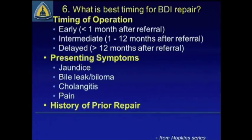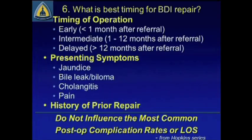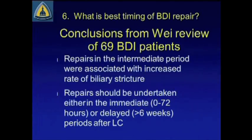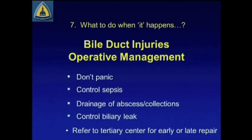What is the best timing for bile duct injury repair? Regardless of timing of the operation, presenting symptoms, or history of prior repair, none of these factors influence the most common postoperative complication rates or length of stay. A more contemporary study published in Archives last year, looking at a series of 69 patients, concluded that repairs in the intermediate period were associated with increased rate of biliary stricture. Repairs should be undertaken either early in the immediate period or delayed greater than six weeks. Finally, what to do when it happens: don't panic, control sepsis, control drainage of any abscess or collections, control the biliary leak, and refer to a tertiary center for early or late repair — not intermediate timing.